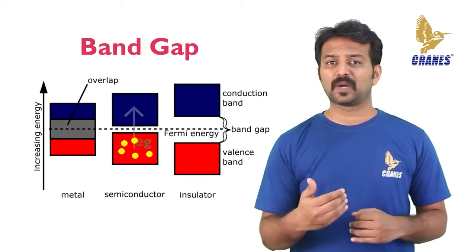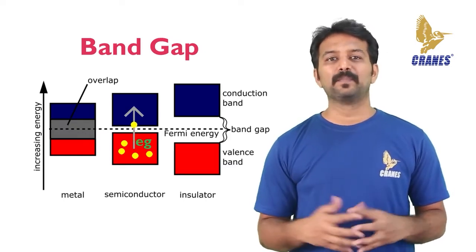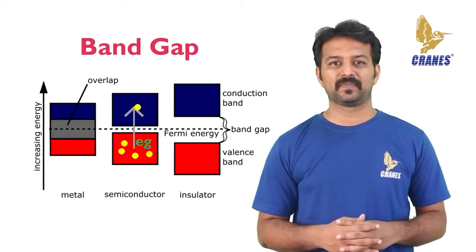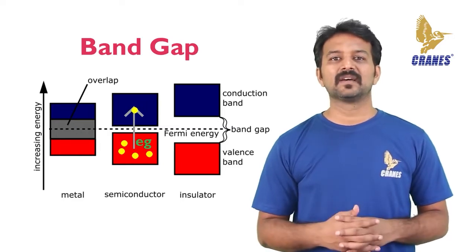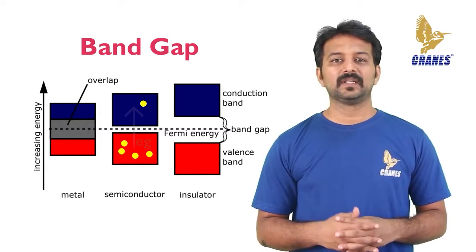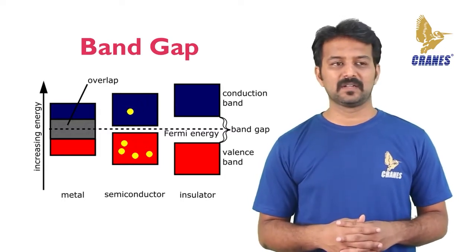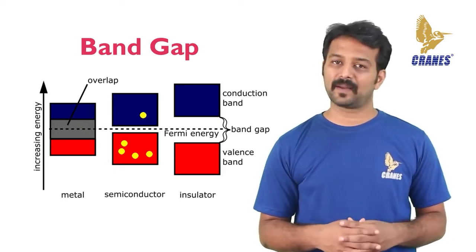When an electron acquires enough additional energy, it can leave the valence shell and become a free electron and it will exist in what is known as the conduction band. The difference in energy between the valence band and the conduction band is called the energy gap or the band gap.